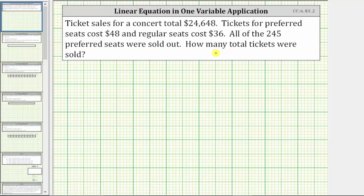Because we're looking for the number of tickets sold, let's define the variable t to be equal to the total number of tickets sold. We also don't know how many regular tickets were sold, but because we know that 245 preferred tickets were sold, and t is equal to the total number of tickets sold, we can use the expression t minus 245 to represent the number of regular tickets sold.